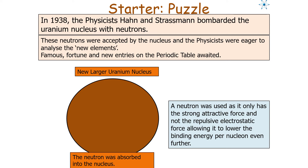In 1938, physicists Hahn and Strassmann bombarded the uranium nucleus with neutrons. These neutrons were accepted by the nucleus, and the physicists were eager to analyse the new elements formed, expecting fame, fortune, and new elements in the periodic table. A neutron was used because it only has the strong attractive force and not the repulsive electrostatic force, allowing it to lower the binding energy per nucleon even further.